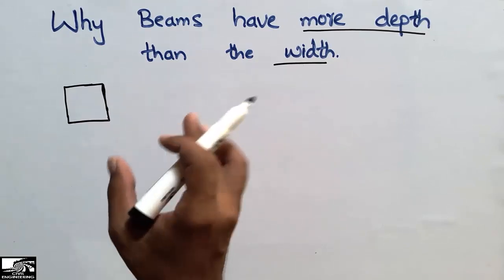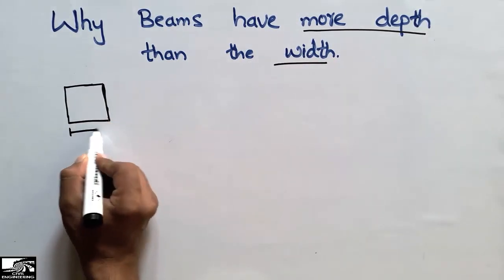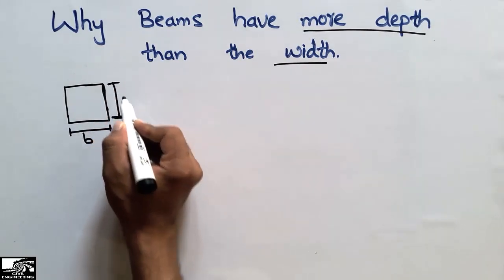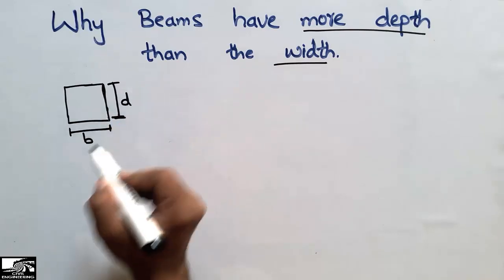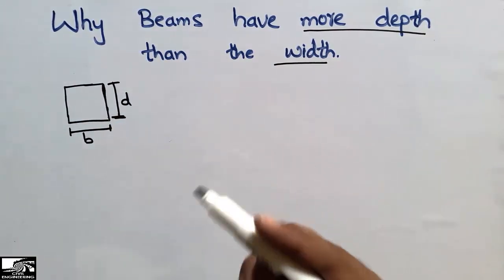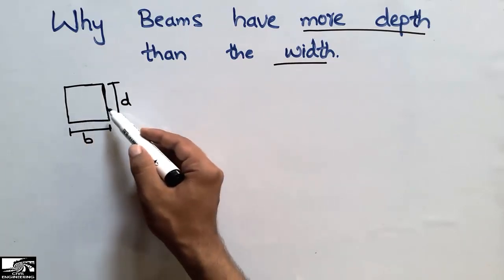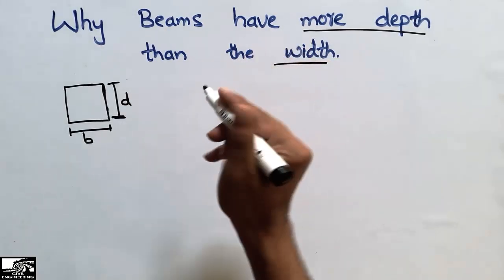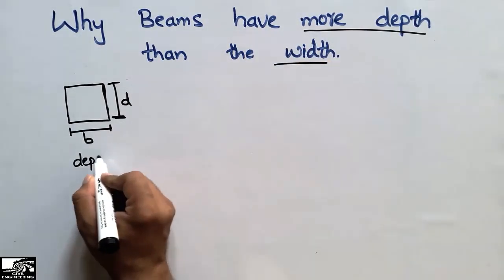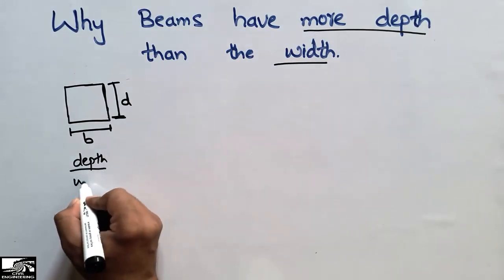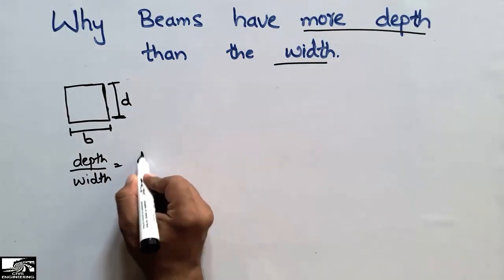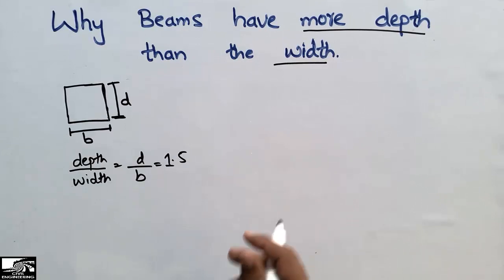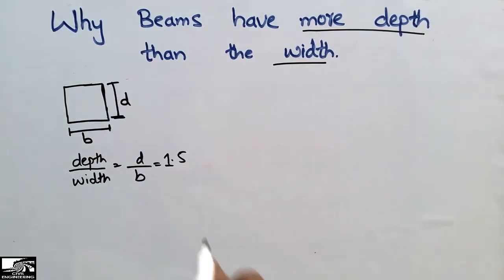You may have seen that mostly beams are designed as rectangular or T-beams. In rectangular beams, this portion is the width of the beam, represented by B, and this portion is the depth of the beam, represented by D. We have generally seen that in design, the depth of the beam is taken more than the width. The general ratio of depth to width is taken as 1.5 — this is not a standard ratio, but most beams are designed according to this ratio.